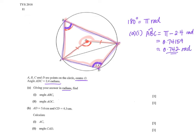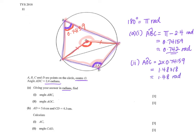Part 2: find angle AOC. This question did not specify reflex, so I find the obtuse angle AOC. Angle at center is twice angle at circumference. Angle AOC = 2 times 0.74159, giving 1.48318, which rounds to 1.48 radians.